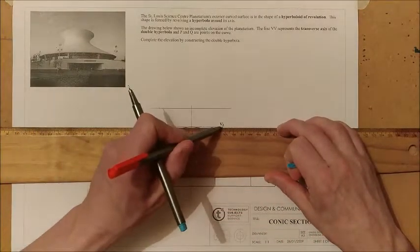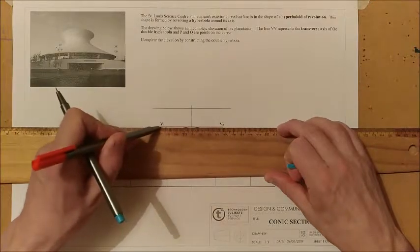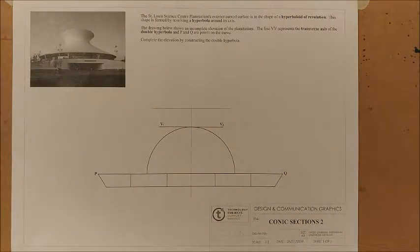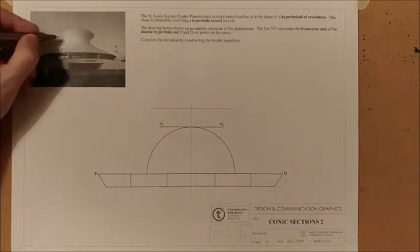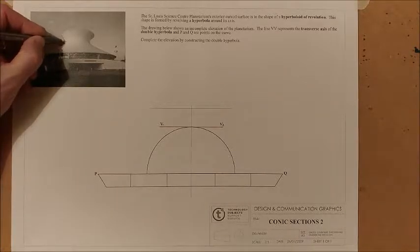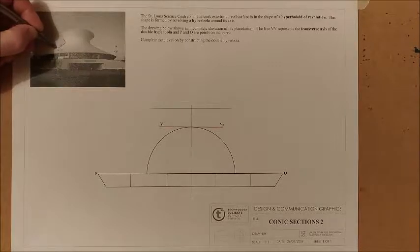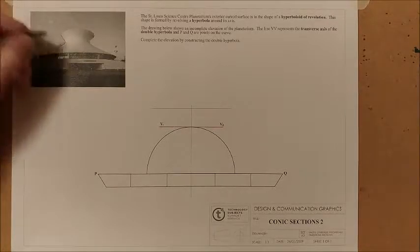You're basically asked here to complete the elevation by constructing the double hyperbola. The first thing you want to do is put a little sketch on your page in relation to what you think the final outcome is going to look like. First of all, we're going to see here is our hyperbola, this is the kind of outline that we're looking to draw or to construct.